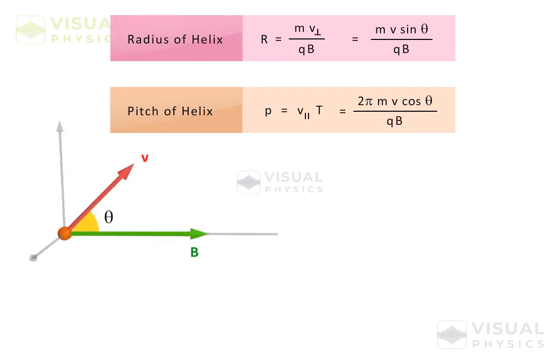So for the given velocity and angle, ratio of pitch to radius of a helix will be equal to this term.